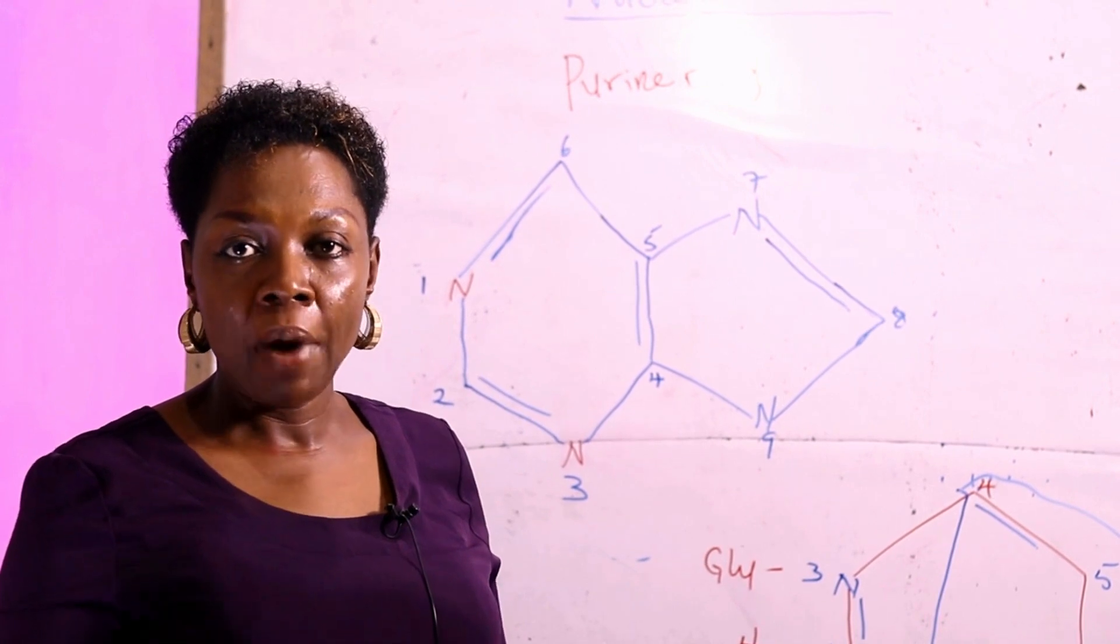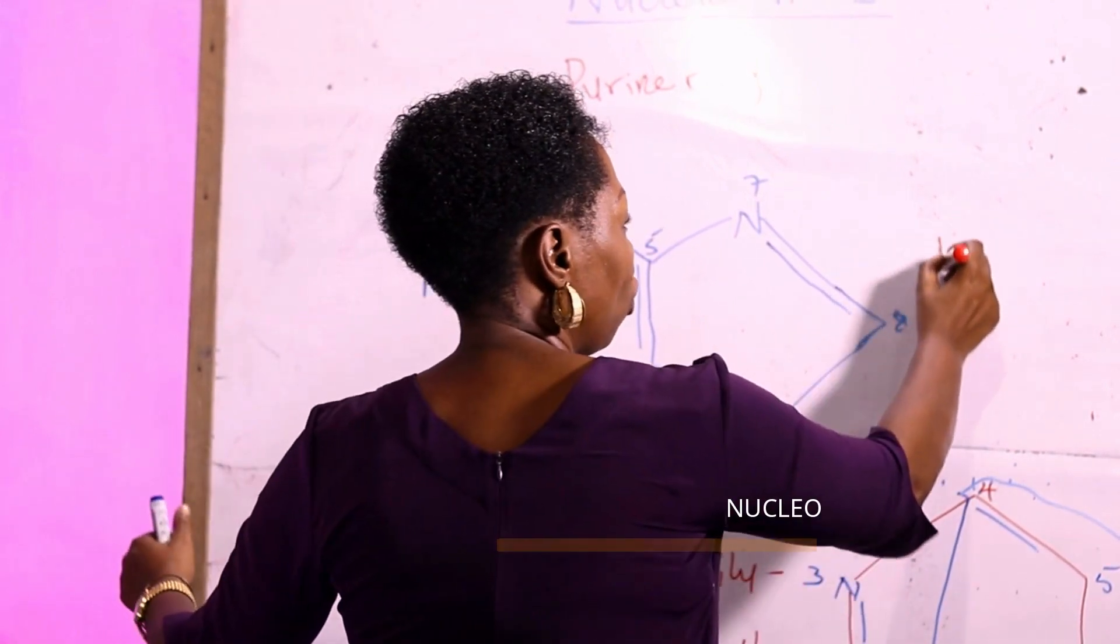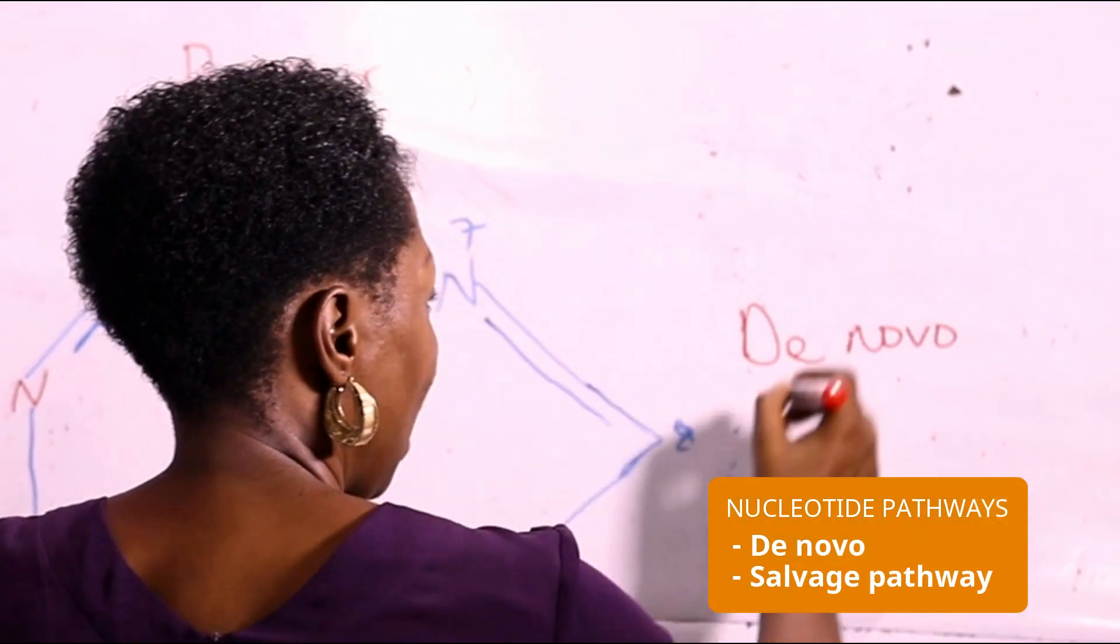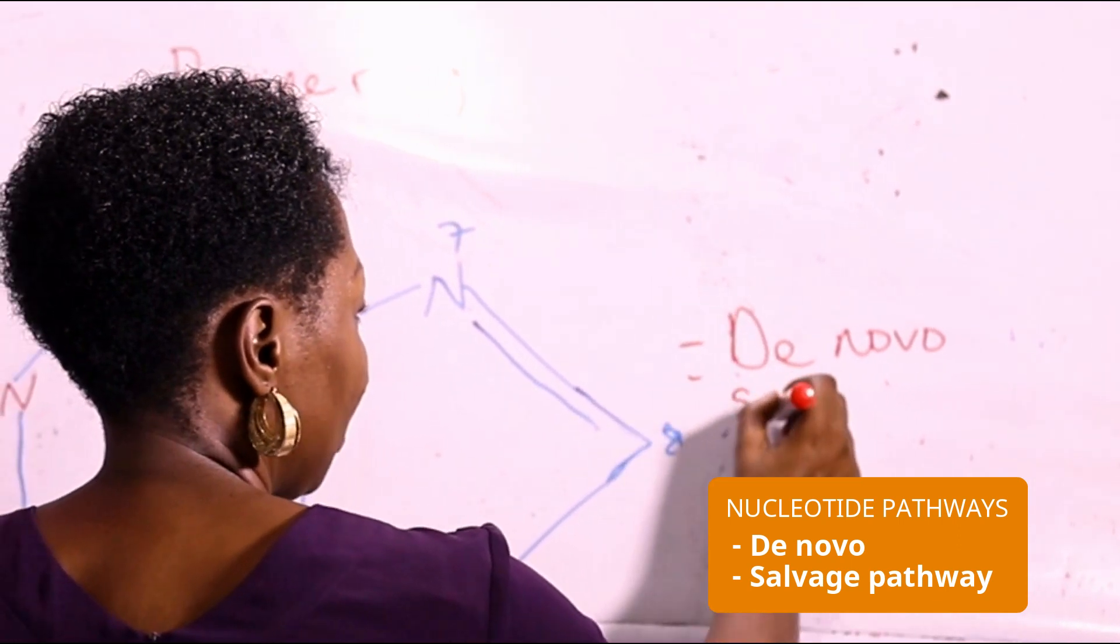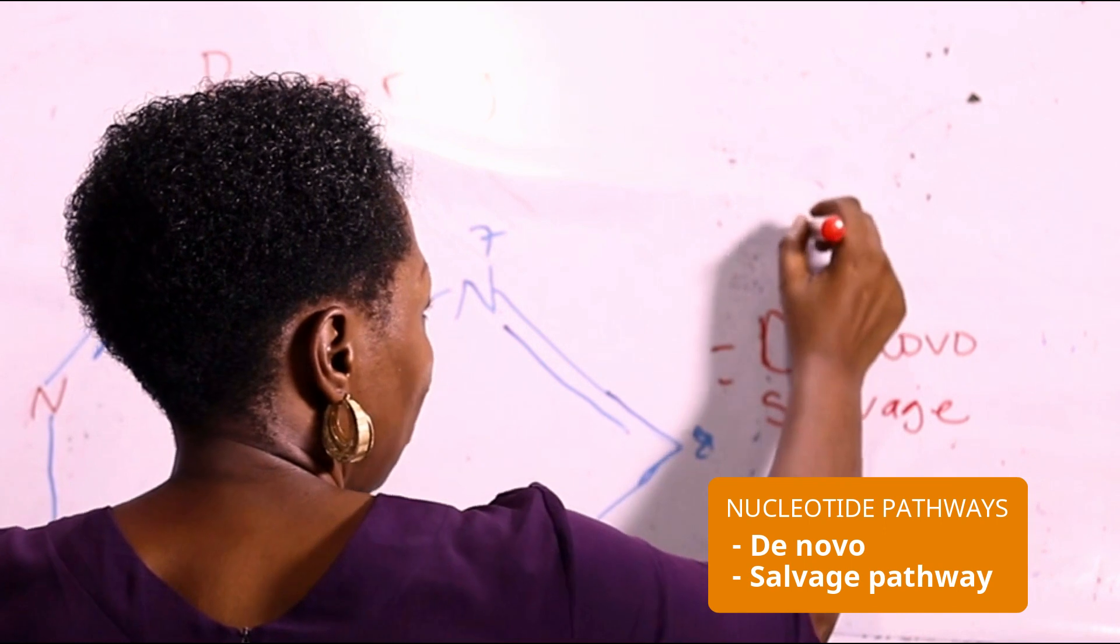For nucleotide biosynthesis, there are two major pathways. We have the de novo and the salvage pathways.